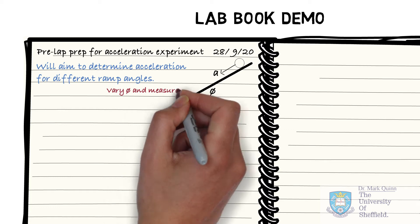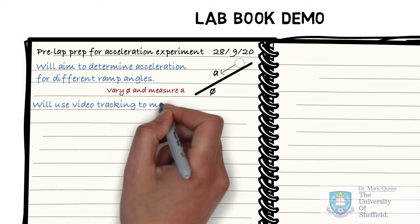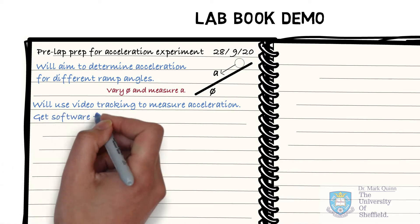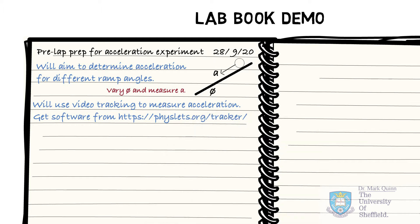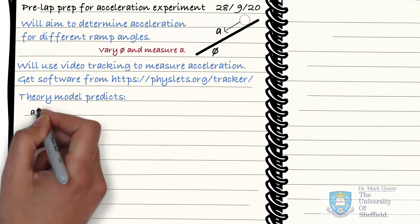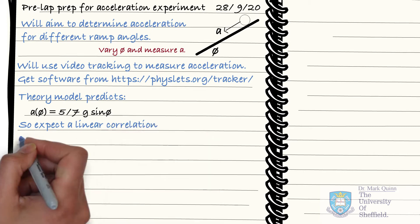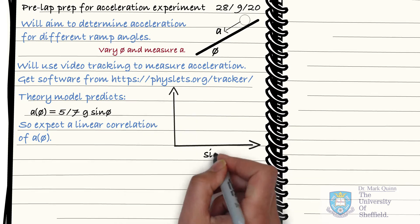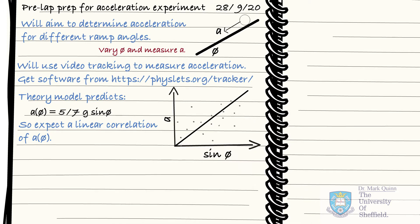Here we are going to be measuring acceleration as a function of the ramp angle. Next, start to think about how you will perform the measurements. In this example, we could start by downloading and testing out the tracking software that we will need in advance of the experiment. This could reveal useful ideas to guide our thinking before the experiment happens. Many experiments are informed by some theoretical prediction, so start thinking about the implications of the theoretical model. What correlations would you expect to measure? Perform some quick sketches of graphs to help your thinking. This will help us consider whether we need to use a linear or non-linear analysis method, for example.